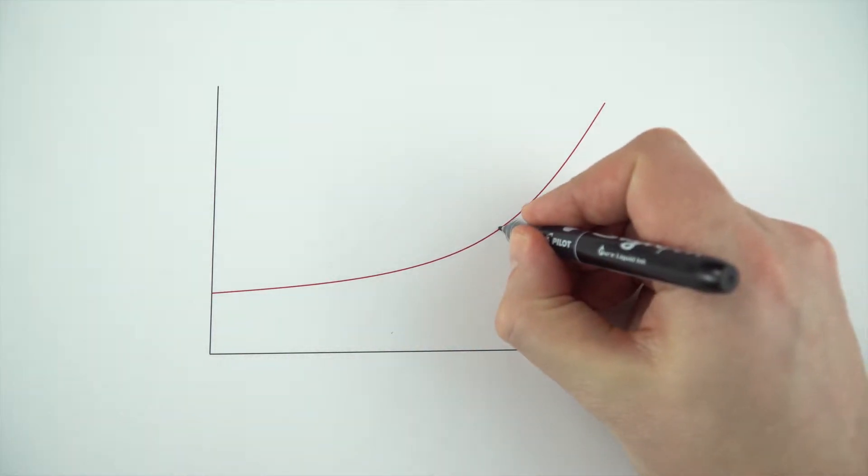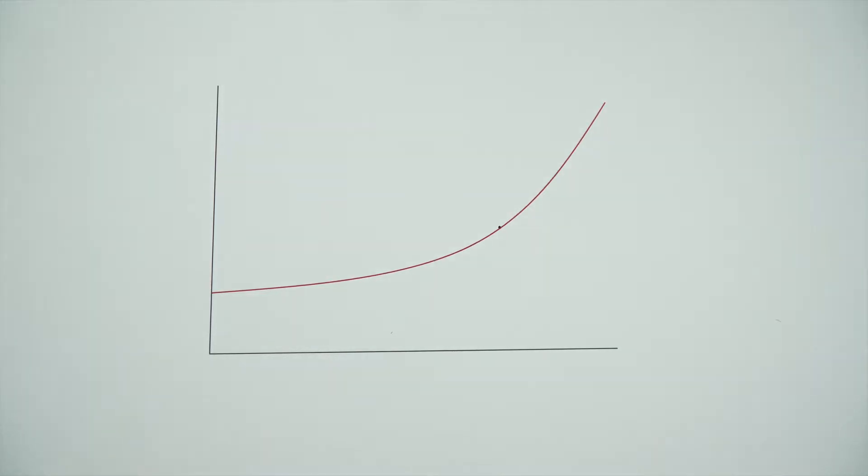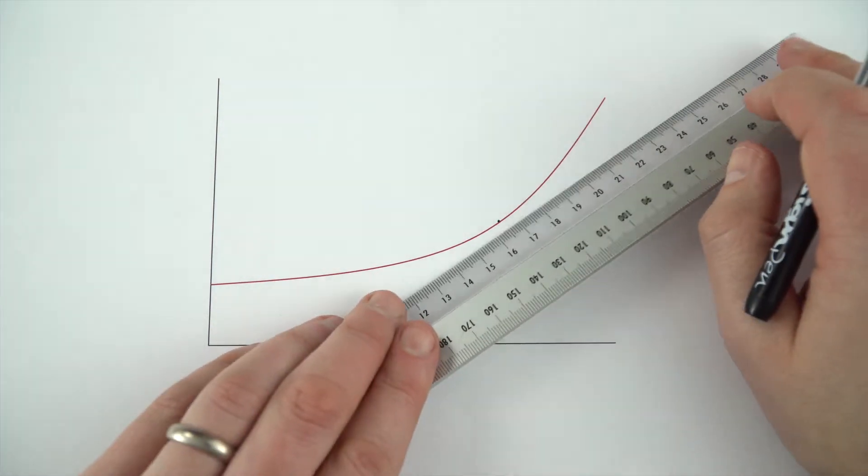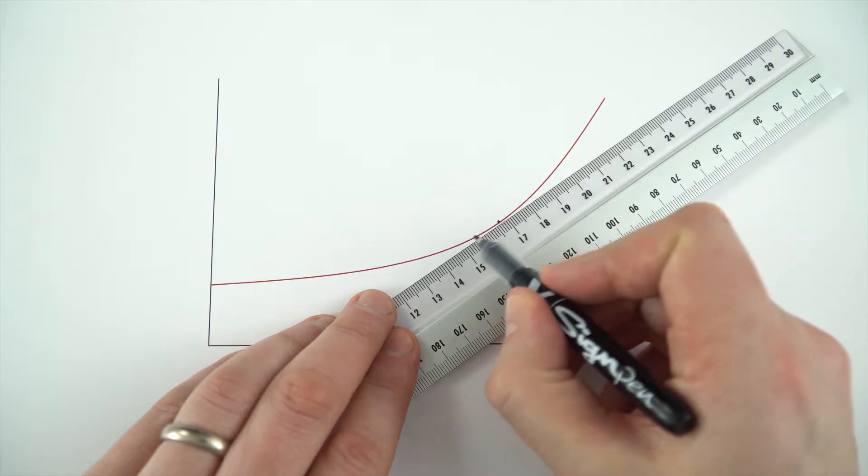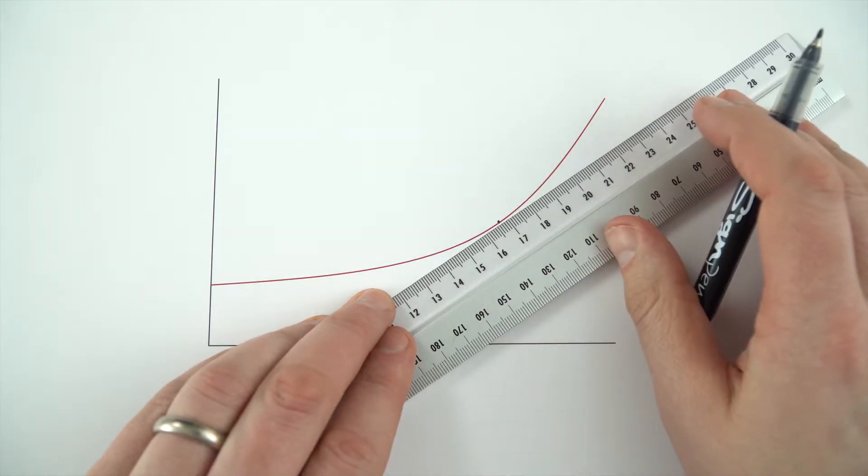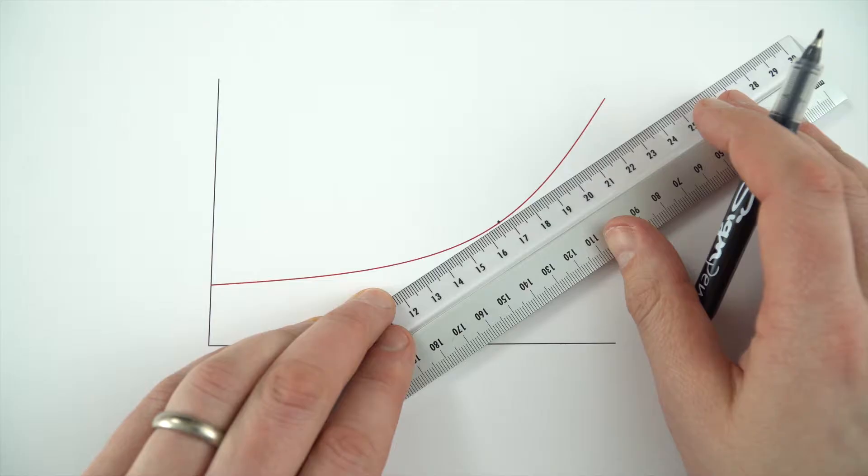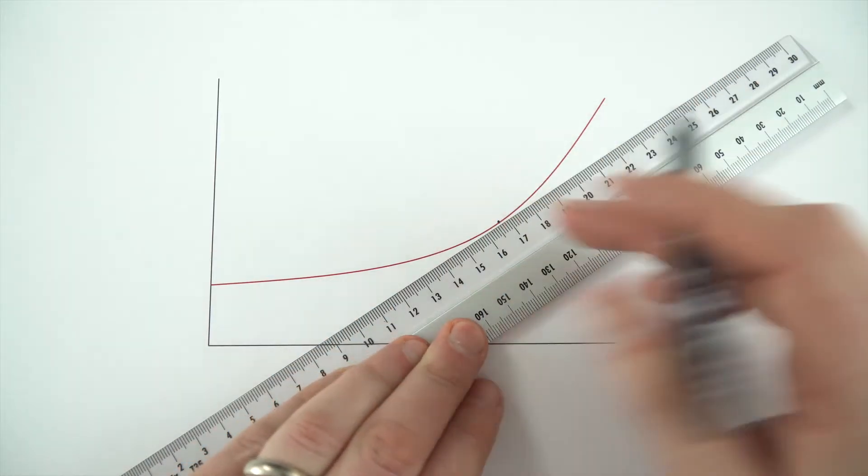So say for example we wanted to know the gradient of this point here. What I'd do is I'd get my ruler and I'd put it on so that the flat line is basically in line with the curve here as it meets it. Now this is a bit of your judgment and sort of using a bit of eye to work out where it might be.